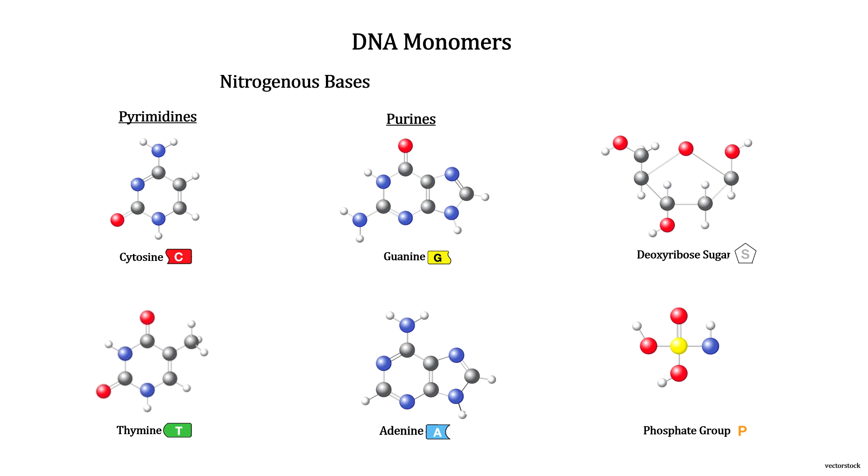Here's a ball and stick view. The bases come in two categories: the pyrimidines with a single ring, and the purines with two rings. These bases are used by all living things on Earth.